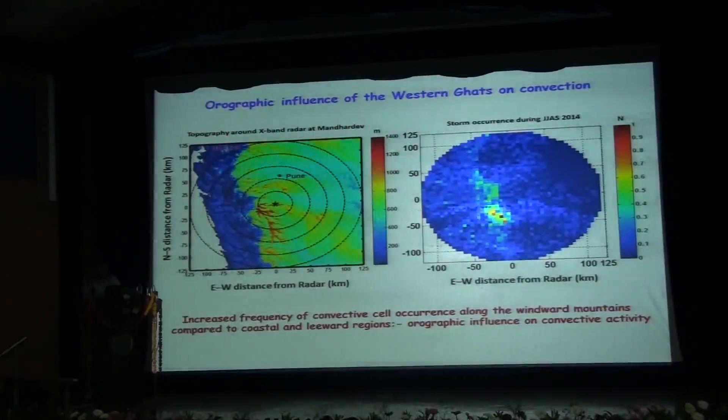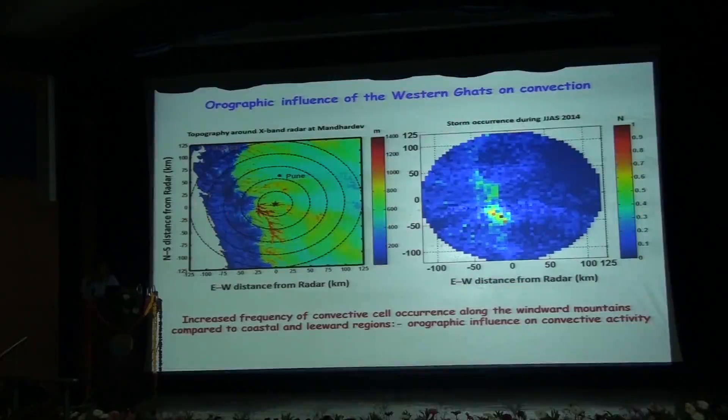Now I shall be discussing the orographic influence of Western Ghats on convection. The figure to the left is the topography map as we have seen earlier. There is a sharp rise of topography along the north-south ranges as evident in this figure. Figure to the right is the composite of normalized storm frequency occurrence during monsoon 2014. We see a nice clustering of enhanced storm activity along the windward slopes of the mountain. They tend to form and maintain along the elevated slopes compared to the coastal and lee regions. Thus the increased frequency of convective cell occurrences along the windward mountains compared to coastal and lee regions highlights the orographic influence on convective activity.